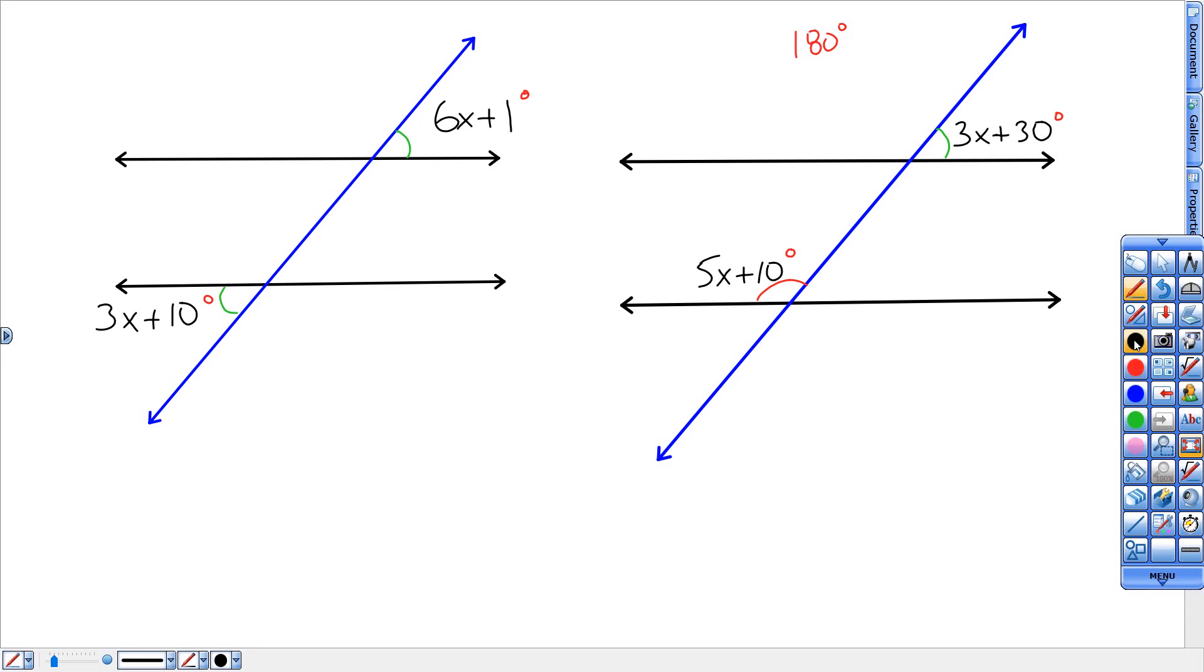Alright, so here we go. For this first one, because they're equal, I'm going to set these two equal to each other. So I'm going to set 6x plus 1 equal to 3x plus 10.